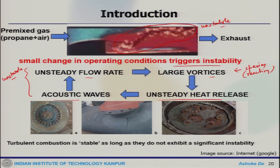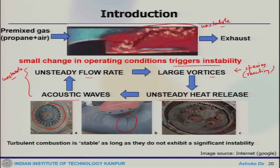Once the system is unstable, consequences include big cracks on the combustor wall, damage to swirl burners, damage to the dump plane and combustor walls. This kind of instability has a huge impact both on operating conditions and from a materials point of view. Turbulent combustion is considered stable only as long as it does not exhibit any significant instability.